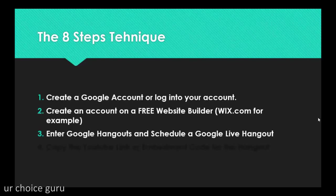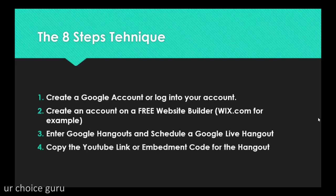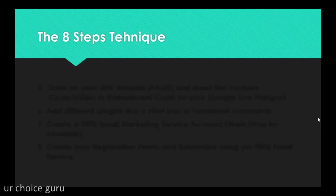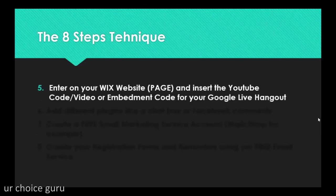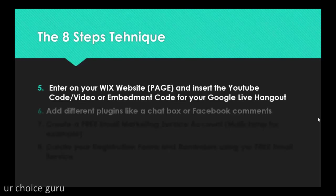Google Hangouts will appear and you enter it. Then you schedule a Google Live Hangout — not a normal one, but a Live Hangout. You copy the distribution links and sharing options, which will include a YouTube link or an embed code for your Hangout. The step number five is to enter your Wix website page that you have created, insert the YouTube video code or embed code for your Google Live Hangout on your page wherever you want the actual webinar video to appear.